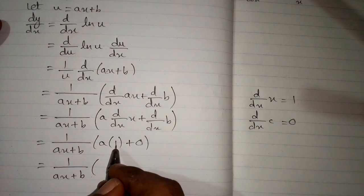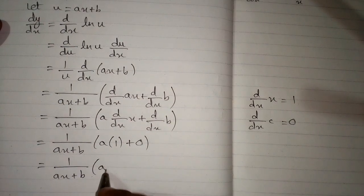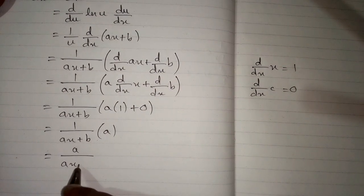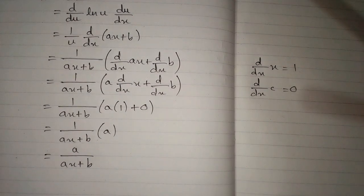Now a times 1 is a and a plus 0 is a. And this can be written as a upon ax plus b. And this is the required answer.